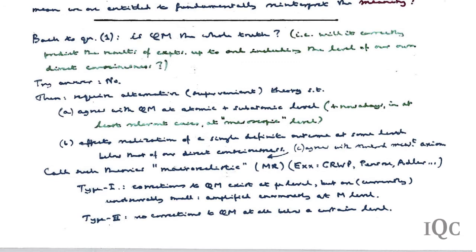Type 2: basically no corrections to quantum mechanics at all at the level of single atoms or electrons, but at some level of size, complexity, or other relevant figure of merit, something goes wrong and a very different kind of theory must be applied.